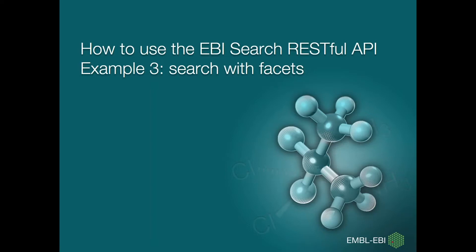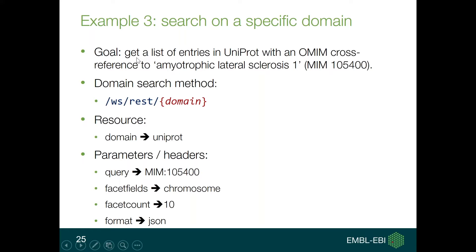The third example is about searching on a domain and showing facets. The goal is to get a list of entries in UniProt — essentially proteins — which have an OMIM cross-reference to amyotrophic lateral sclerosis 1. In UniProt, the cross-reference to OMIM is called MIM, with identifier 105400. Annotations to OMIM identifiers in UniProt are useful because they mark which data is related to a specific disease.